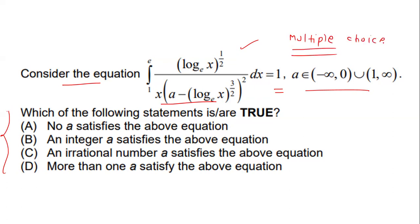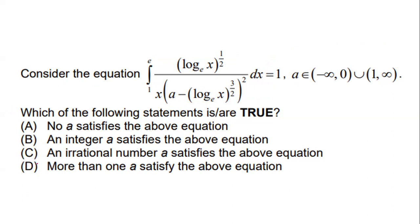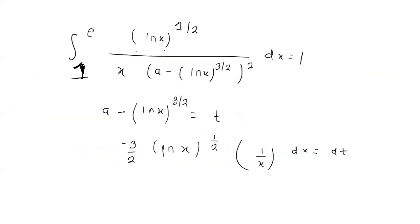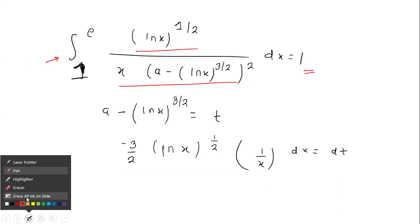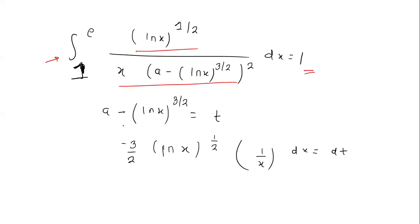We have to tell all the options which are true based on this information. In this integral we have ln(x)^(1/2) in the numerator and x multiplied by (a minus ln(x)^(3/2)) whole squared in the denominator. The limits for the integral are from 1 to e, and this integral is equal to 1.